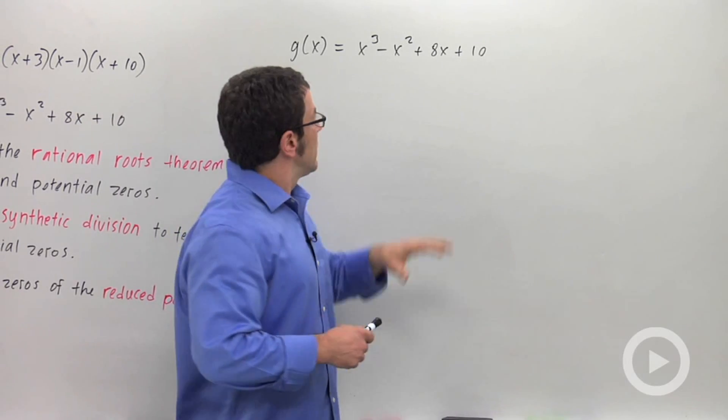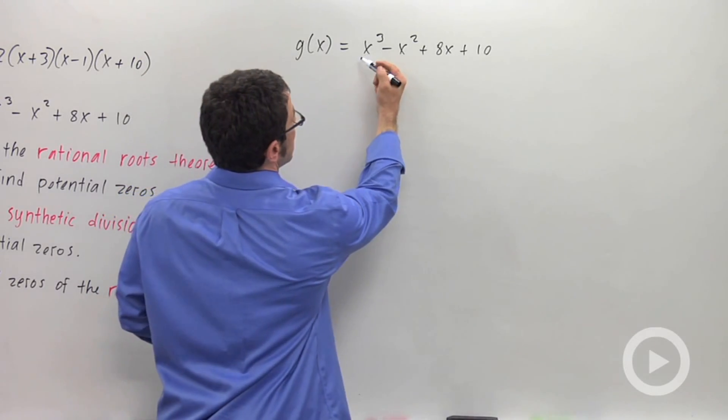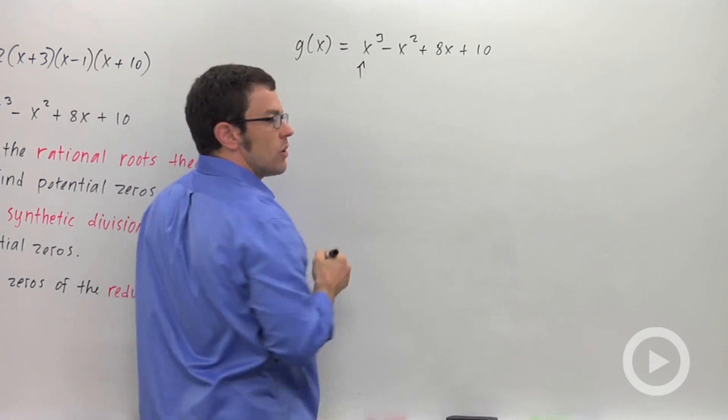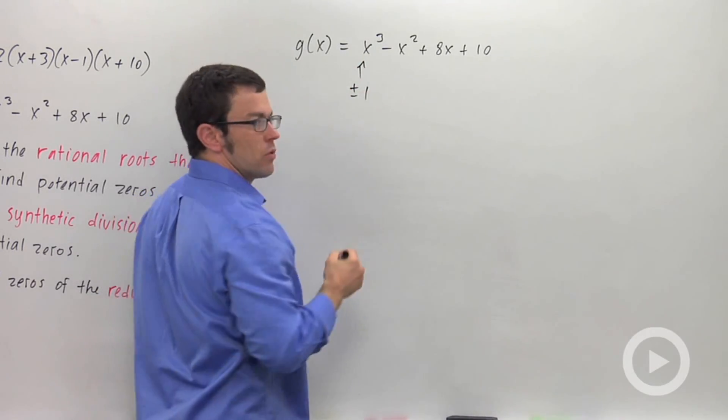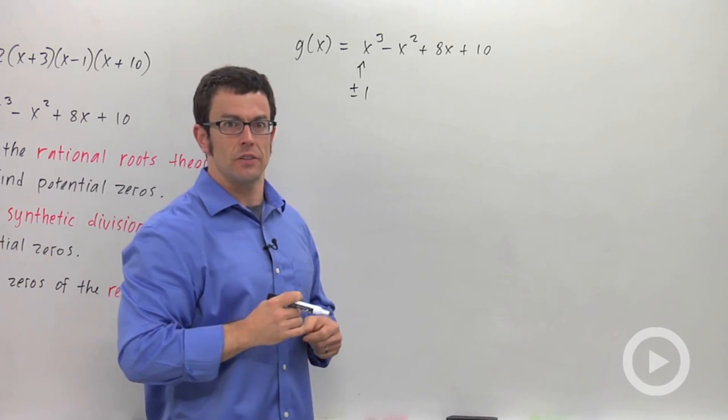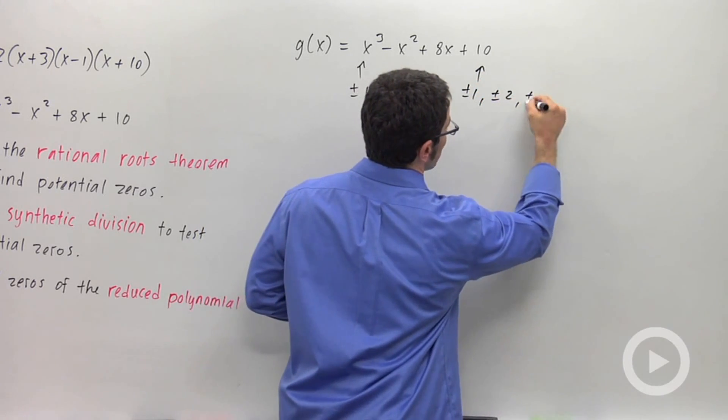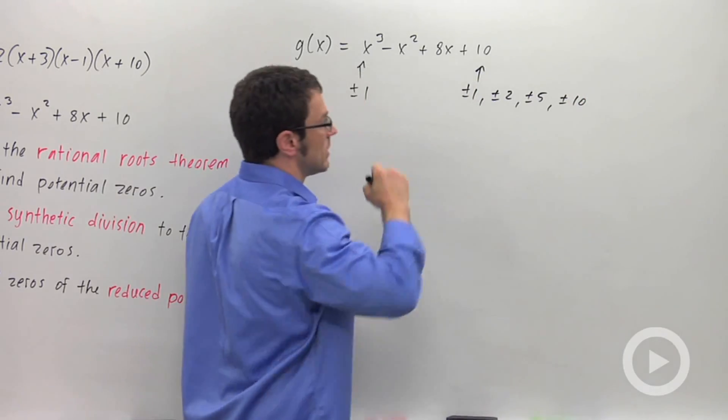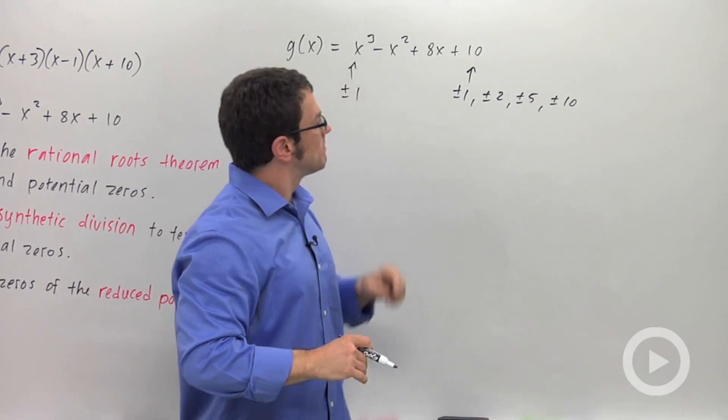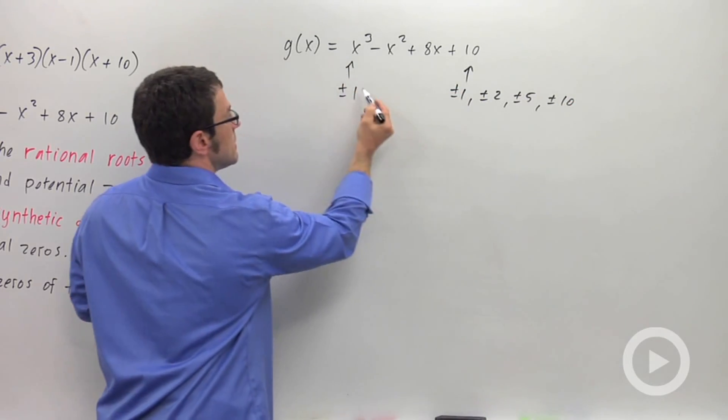Let's see how this works with the example of g of x. So I want to find all the zeros of this polynomial function. Now, the rational roots theorem says to look at the integer factors of the leading coefficient and the constant. Now, the leading coefficient is 1. Its integer factors are negative 1 and 1. For example, 1 times 1 is 1, and negative 1 times negative 1 is 1. So those are integer factors of 1. And for 10, we look at plus or minus 1, plus or minus 2, plus or minus 5, and plus or minus 10. We could take two of these numbers, multiply them, and get 10. Like negative 1 and negative 10 would work.